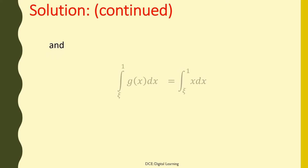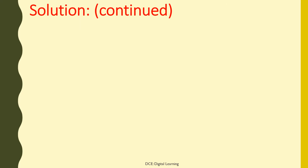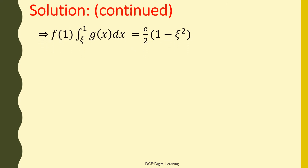The integral of g(x) dx from η to 1 equals the integral of x dx from η to 1. On integrating, this equals [x²/2] from η to 1, which equals 1/2 - η²/2. Therefore, f(1) times the integral of g(x) dx from η to 1 equals (e/2)(1 - η²).